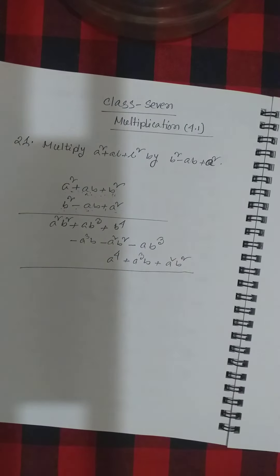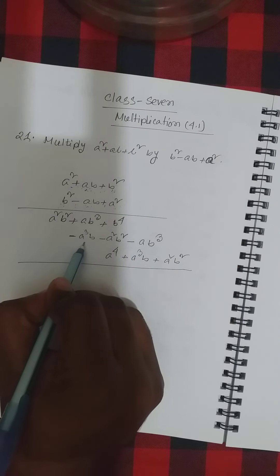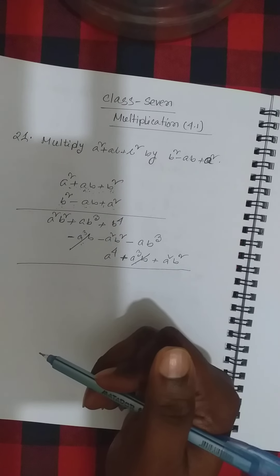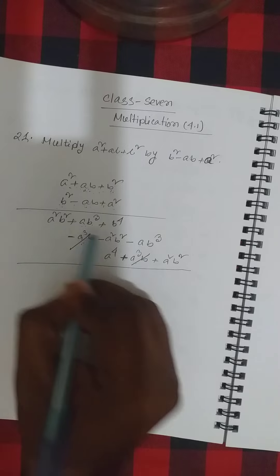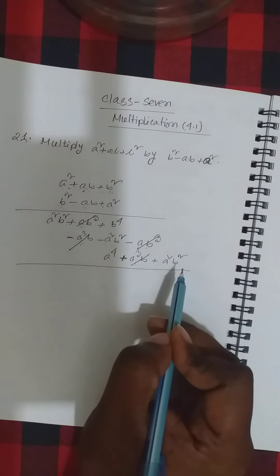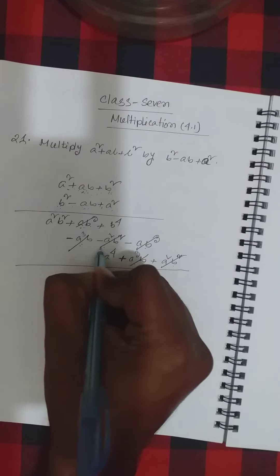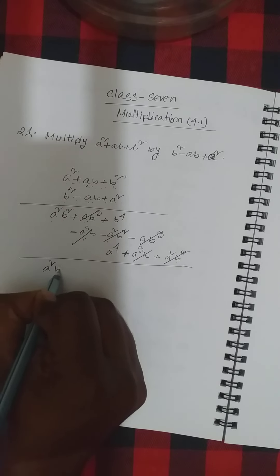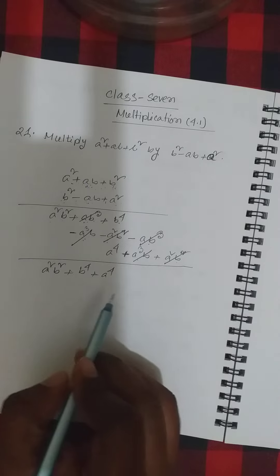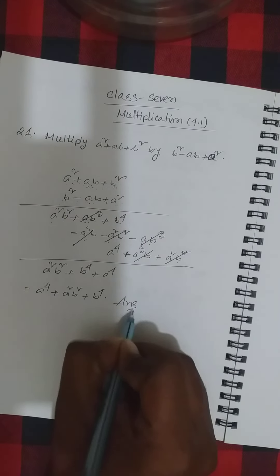Now we add all parts together. Minus a-cubed·b plus a-cubed·b — same expression but sign is opposite, so it cancels out. Plus ab-cubed minus ab-cubed — same expression, opposite sign, cancels out. Minus a-squared·b-squared plus a-squared·b-squared — same expression, opposite sign, cancels out. So at last we find our product is a to the power 4 plus a-squared·b-squared plus b to the power 4. This is the answer.